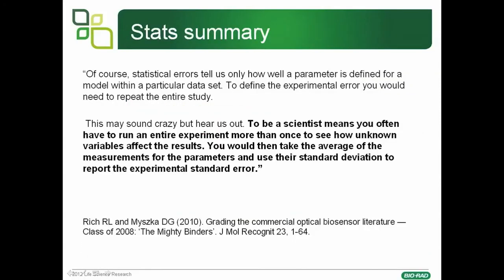To quote David Mischka: the statistical error, or standard error, only tells us how well a parameter is defined for a model with a particular data set. To define the experimental error, you need to repeat the experiment. He goes on to write: this may sound crazy, but to be a scientist often means you have to run the entire experiment more than once. You will then take an average of the experiments for the parameters and use their standard deviation to report the experimental standard error.